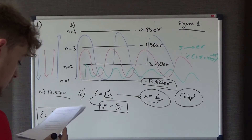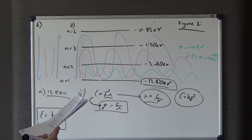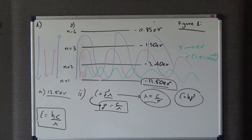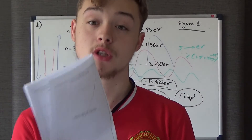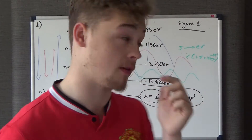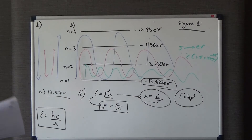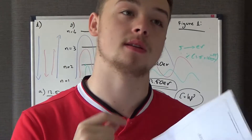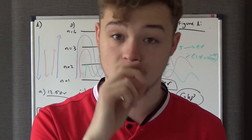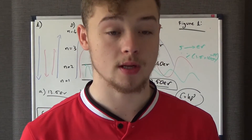We want the wavelength of the photon with the smallest energy. The smallest energy photon comes from the two energy states with the smallest difference between them. Remember, we're looking for the smallest energy, not necessarily the smallest wavelength — though they go hand in hand.